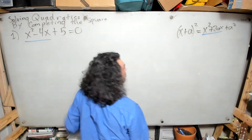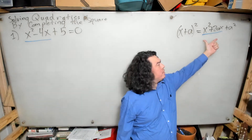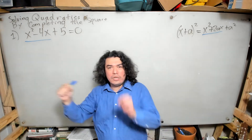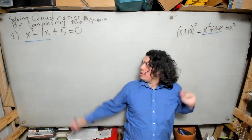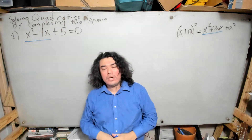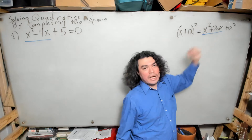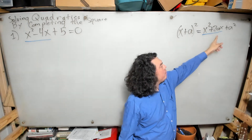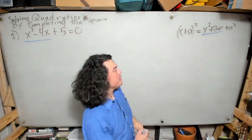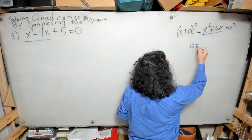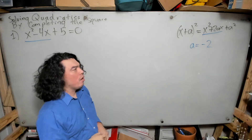I go to my formula and ask: what does a have to be so that x squared plus 2ax equals x squared minus 4x? You might say it must be negative 2, because 2 times negative 2 gives negative 4, so I'd have x squared minus 4x — and you'd be right. So a equals negative 2.